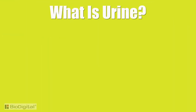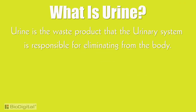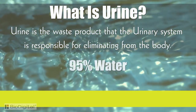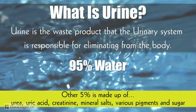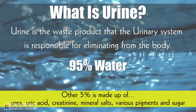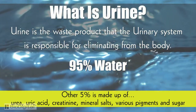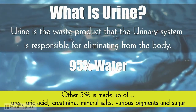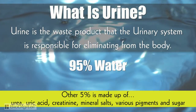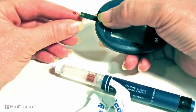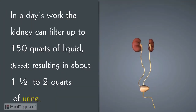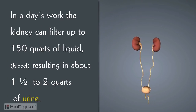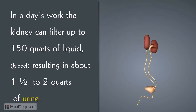So what exactly is urine? Urine is the waste product that the urinary system is responsible for eliminating from the body. It is 95 percent water, and the other five percent is made up of urea, uric acid, creatinine, mineral salts, various pigments, and sugar. Excess sugar found in the urine can be indicative of diabetes. In a day's work, the kidneys can filter up to 150 quarts of liquid, resulting in about one and a half to two quarts of urine — that's if you're drinking the proper amount of water.